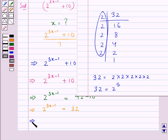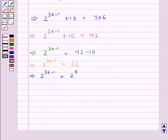That is, we get 2 to the power 3x minus 1 is equal to 2 to the power 5. As you can see, the base is the same for the right side and the left side, that is the base is 2. Now we compare these exponents.